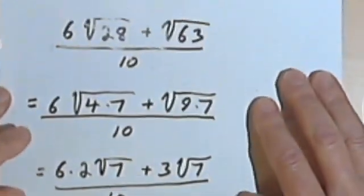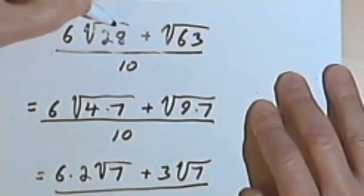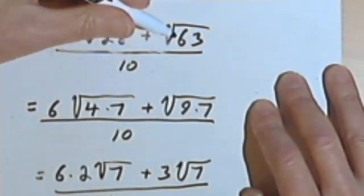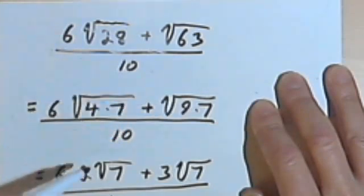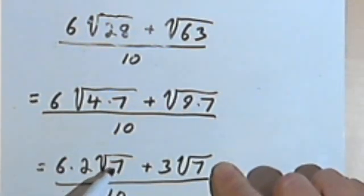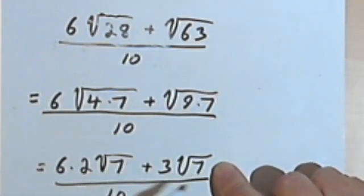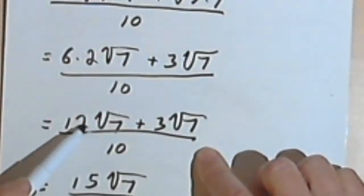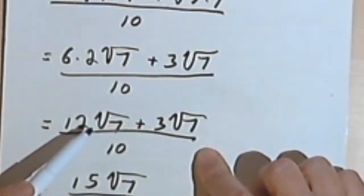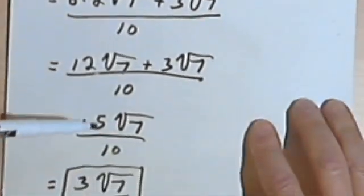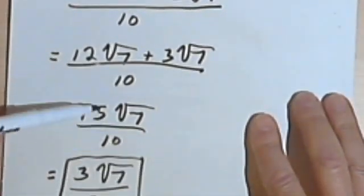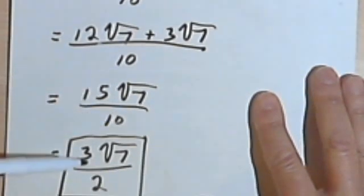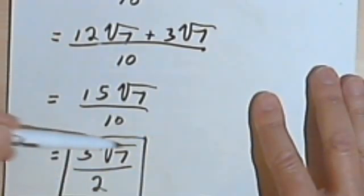And once again, the principle was the same for this one as it was for the other ones. Since we don't have the same radicands, we simplify each of the radicals, and if we then end up with radicands that are similar as I did here, we can combine them either by adding or subtracting, whatever the problem calls for. And since this was also a fraction, we had to take care of the division part of it. So we just reduced this 15 tenths into 3 halves, and that's going to be my answer.